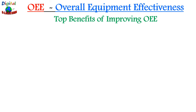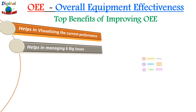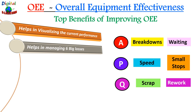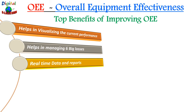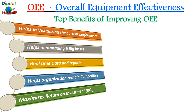What are the top benefits of improving your OEE score? It helps visualize current performance by looking at all three parameters — availability, performance, and quality — giving the current production status. It helps manage the six big losses in TPM: breakdown, waiting, speed reduction, small stops, scrap, and rework. OEE provides real-time data and reports to evaluate company position. It helps organizations remain competitive by comparing against world-class OEE benchmarks, and it helps maximize return on investment by identifying the best areas to invest.